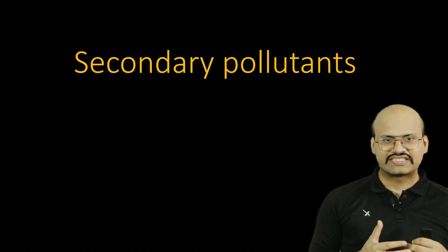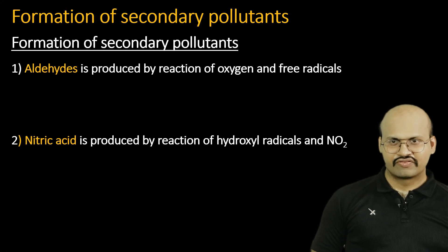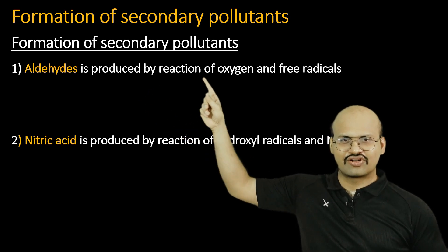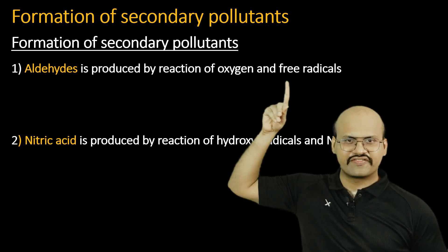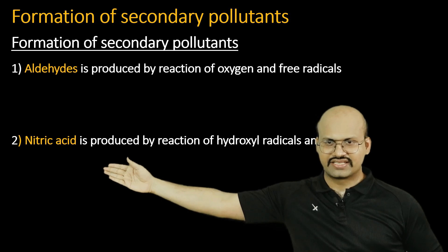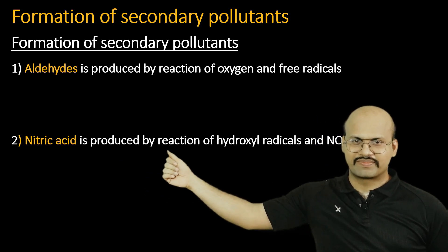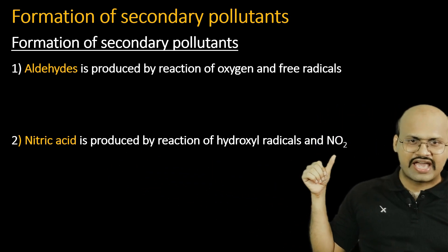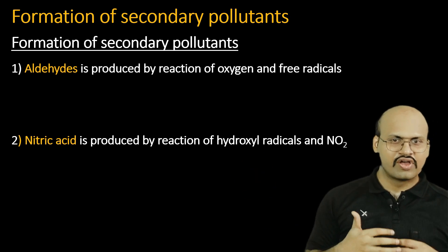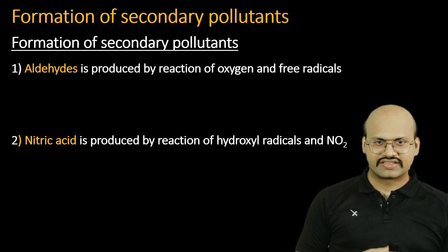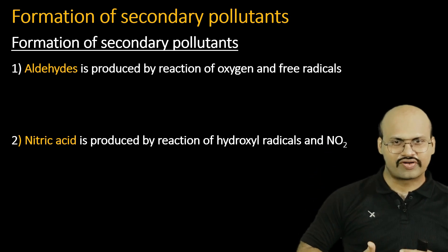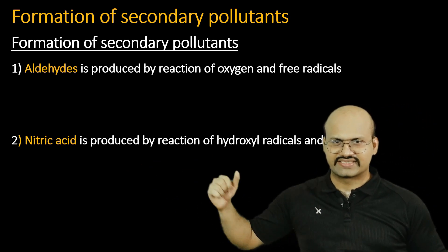What are the main secondary pollutants? Aldehydes are produced by reaction of oxy-anion free radicals. Then there is nitric acid in photochemical smog, which is created by reaction of NO₂ with hydroxyl radicals. These hydroxyl radicals come from water vapour in the atmosphere. So NO₂ reacts with water vapour to give us nitric acid.